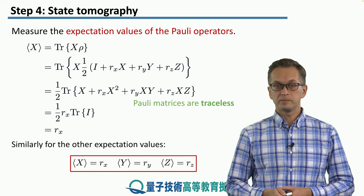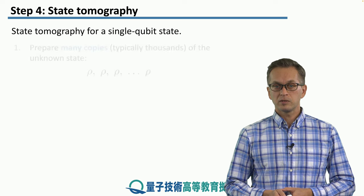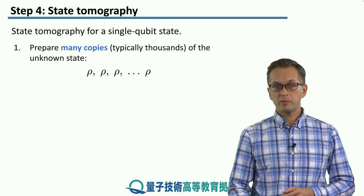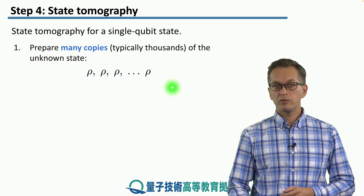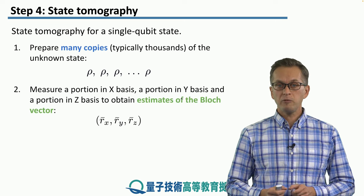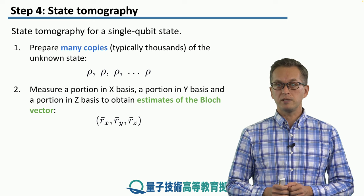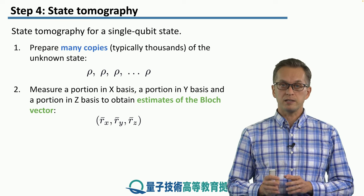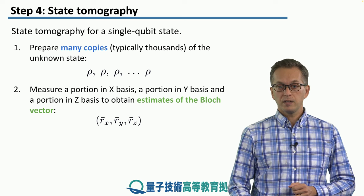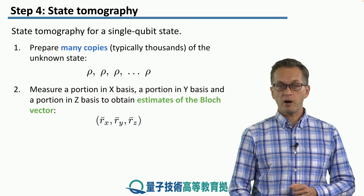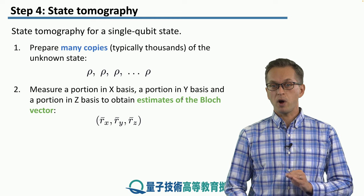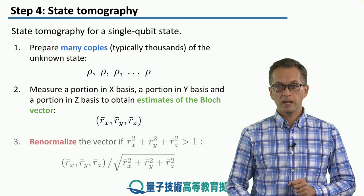This is the protocol for state tomography for a single qubit. First, we prepare many copies of the unknown state ρ. Many usually means thousands. Then we measure some portion of these states in the X basis, some portion in the Y basis, and some in the Z basis. And we obtain the estimates of the Bloch vector, given by these bars over here. So we estimate rₓ, and we write it r̄ₓ, r̄ᵧ, r̄ᵤ.